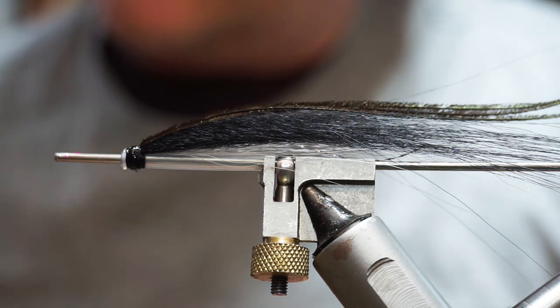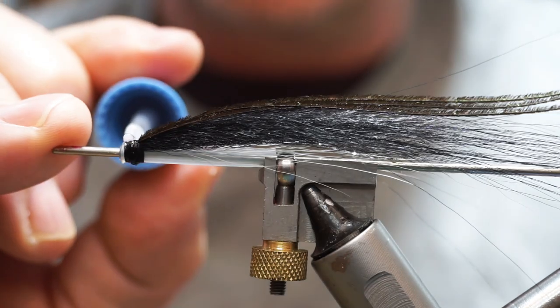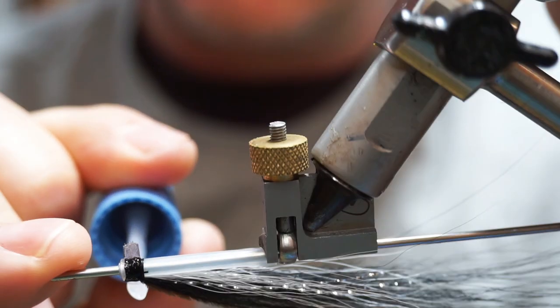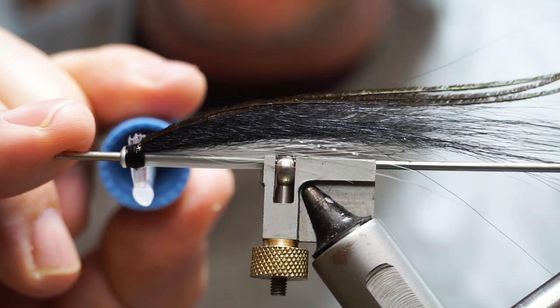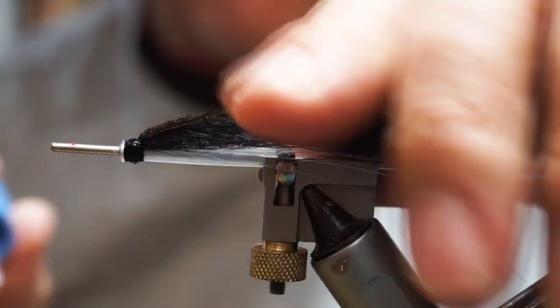Then we'll take the clear varnish again, rotate the fly around.